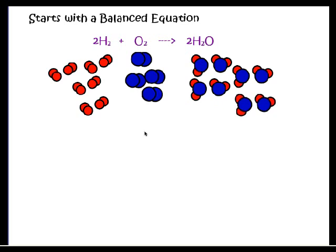Everything stays in this ratio. If I have ten hydrogens, I would need five oxygens and get ten waters. We can also work in different units, like a dozen. If I had two dozen hydrogens, how many oxygens would I need? One dozen oxygens, and I would get two dozen waters in the end.